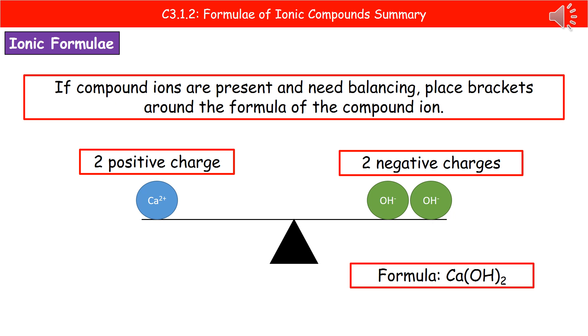If, however, we have something like a group two element, we would have two positive charges. Here we've got calcium, which is a two plus. If that's joining with the hydroxide ion, each hydroxide only has one negative charge. So to balance the positive and negative charges, we'd have to have two hydroxide ions joining to the single calcium ion. So we'd have two positives and then two negatives, one from each hydroxide.